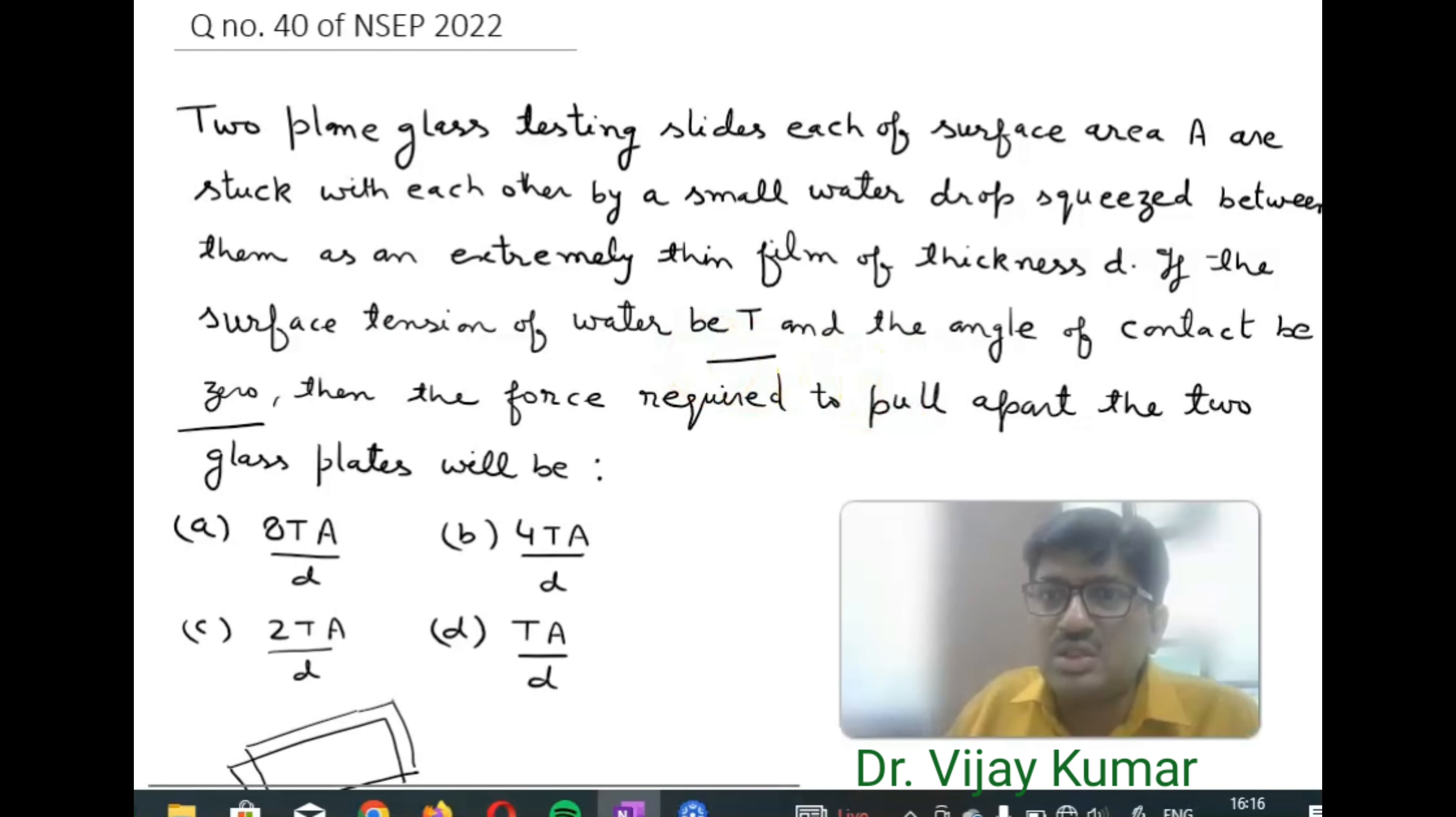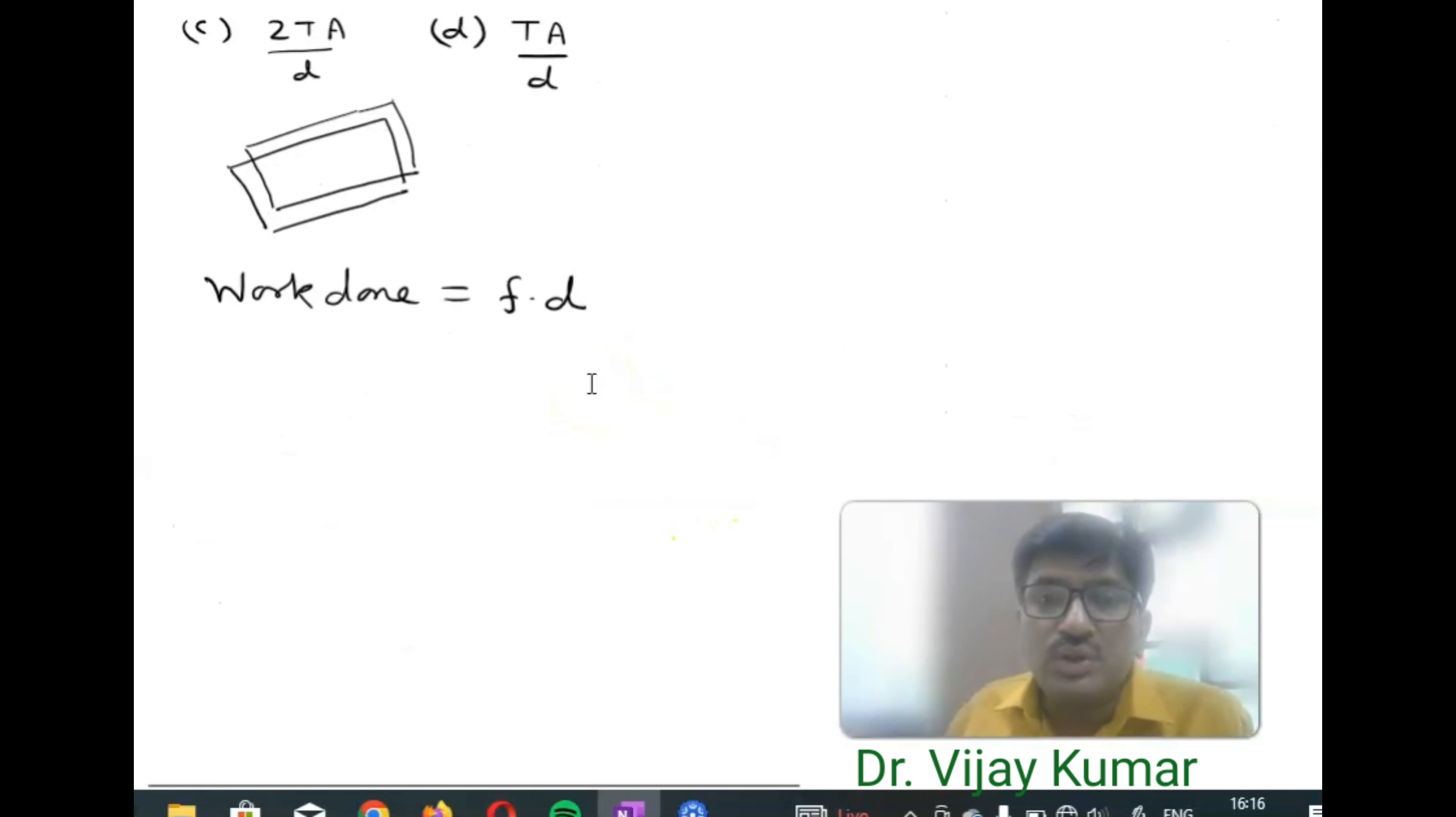We know that if surface area of upper plate is A and surface area of lower plate is A, then in case of surface tension it will be counted as 2A. So work done should be T into surface area.